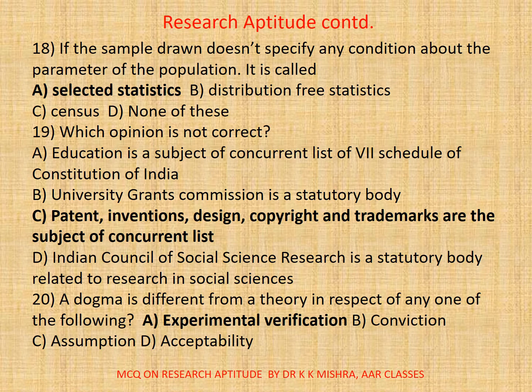Question twenty: A dogma is different from a theory in respect of any one of the following: A: Experimental verification. B: Conviction. C: Assumption. D: Acceptability. The correct option is A: Experimental verification.